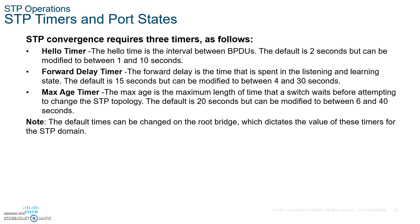Let's talk about timers. Write the following down. The STP timers — if you're going to change any of these, you have to do that at the root bridge only. The hello timer is the interval between BPDUs; the default is two seconds, range one to ten. The forward delay timer is the time for the listening and learning states; default is 15 seconds, range four to 30. The maximum age timer — the time to wait for a change in STP topology — default is 20 seconds, range six to 40.